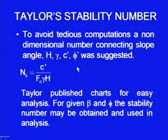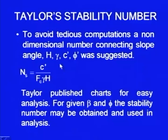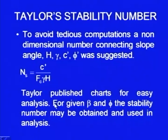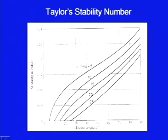Now this is a tedious procedure, and to avoid these tedious computations, a non-dimensional number connecting the slope angle, H, γ, c', and φ' has been suggested — we have already discussed this — it is called the stability number. So this is Taylor's stability number; it is defined as c'/(F_c · γ · H), and Taylor has published charts for easy analysis. For given β and φ, the stability number may be obtained and used in the analysis.